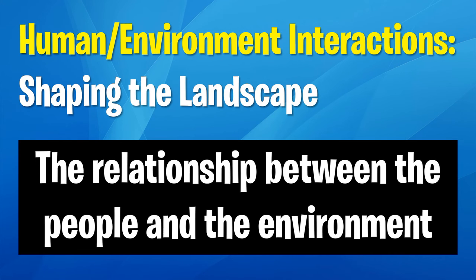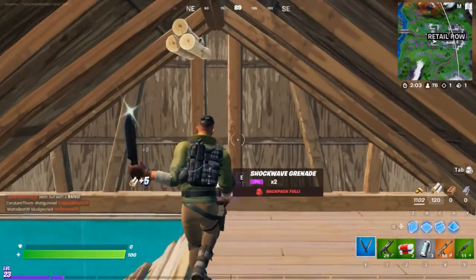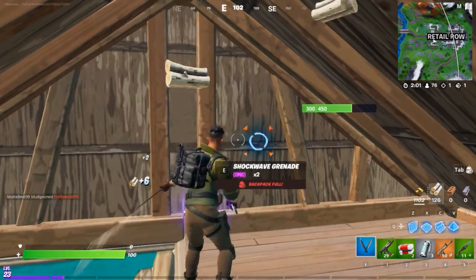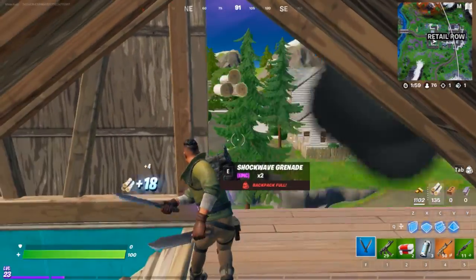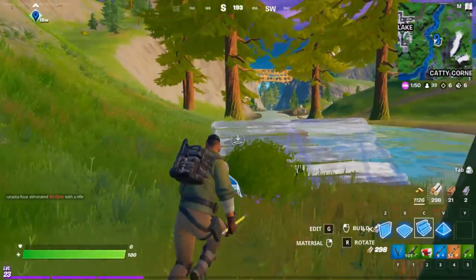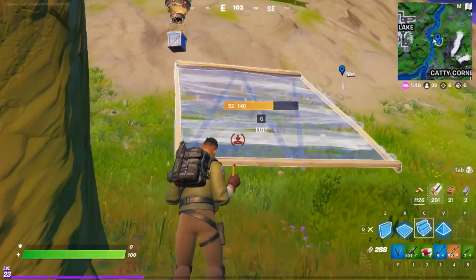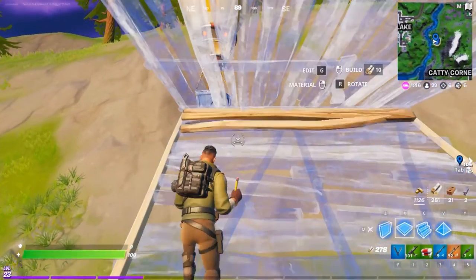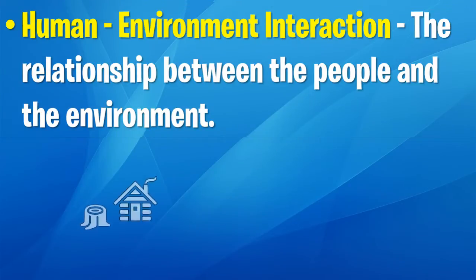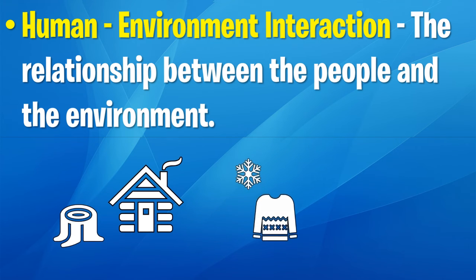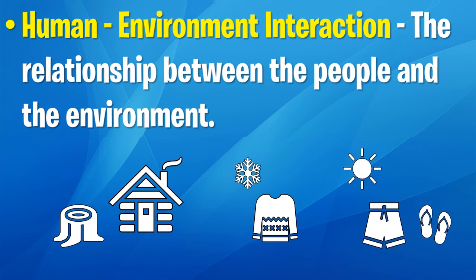Next is human-environment interactions. This theme examines how people interact with the environment to meet their needs. The most obvious example is harvesting resources from the land, and collecting wood, brick or steel to build structures for your personal purposes. Anything from milling lumber to build a cabin, or needing to wear a jumper because the climate is cold, or shorts and thongs because the climate is hot — all this is human-environment interactions.